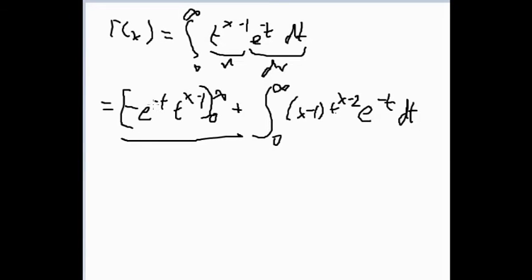So this thing, when t is infinity, we have the exponential function that grows faster than t to the x. So at infinity this is just 0, and then when t is 0, this is also just 0 because we're multiplying by t. So it's just this integral, and we can take the x minus 1 out because it's a constant. And then this integral is just the same as gamma integral, but with x minus 1 replaced by x minus 2. So this is just gamma of x minus 1.